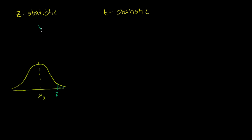To do that, we've been figuring out how many standard deviations above the mean we actually are. We take our sample mean, subtract from that what we assume the mean should be, and then divide by the standard deviation of the sampling distribution. This is how many standard deviations we are above the mean — that distance right over there.